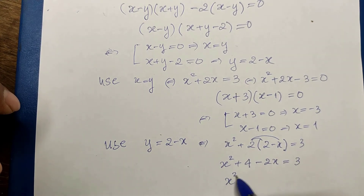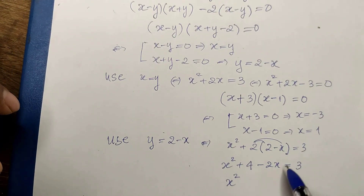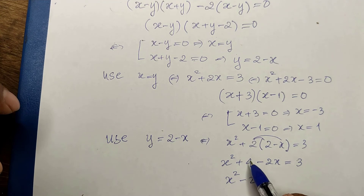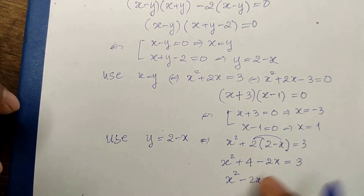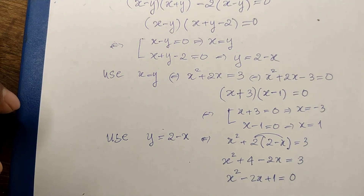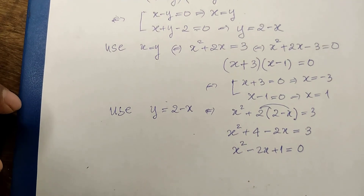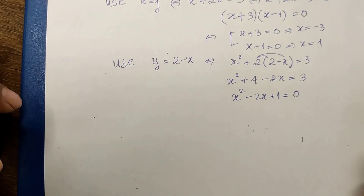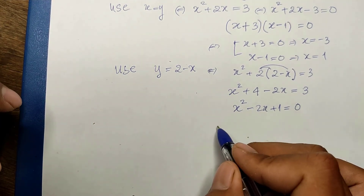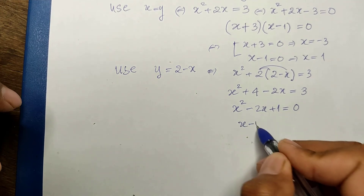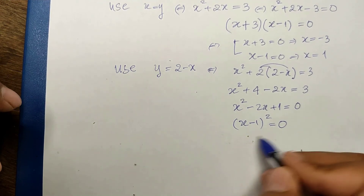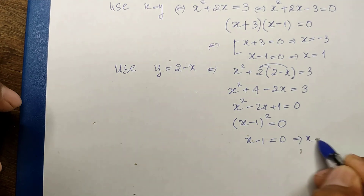Rearranging, we get x squared minus 2x plus 1 equals zero. This factors as (x minus 1) squared equals zero. So x minus 1 equals zero, giving x equals 1. Therefore y equals minus 1.